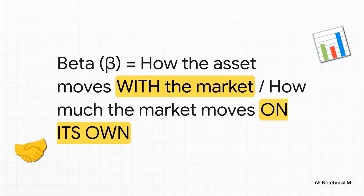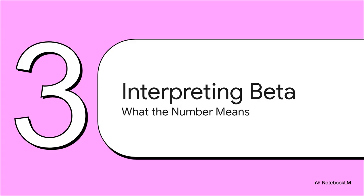Let's break that down even more. Beta is simply a ratio. The top part of the fraction is asking: how much does my asset move with the market? And the bottom part asks: how much does the market tend to move on its own anyway? That's really it. So we've got a formula — but what does the number it spits out actually tell us? That's what really matters here.